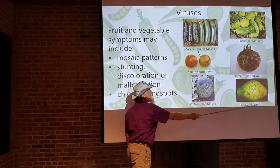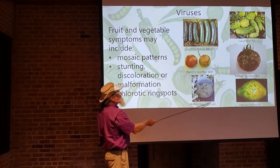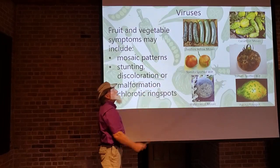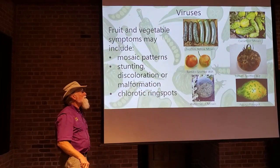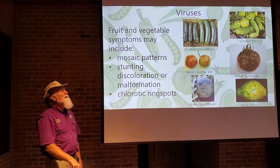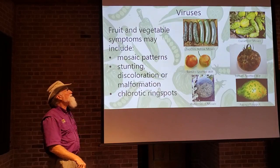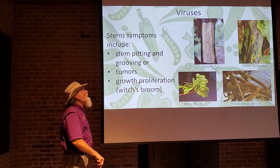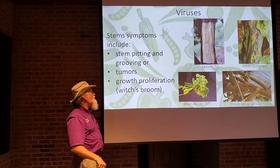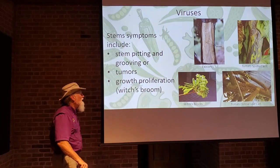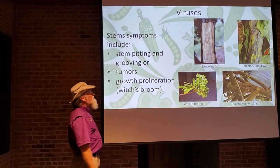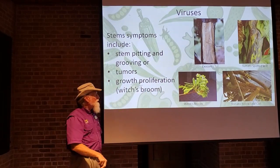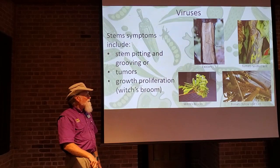Zucchini yellow mosaic virus changes the leaves to very chlorotic leaves. Some stem symptoms would be pitting, grooving, tumors, or growth proliferation such as witch's broom — this is a witch's broom on an ornamental caused by a virus.